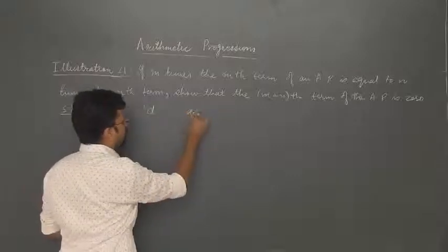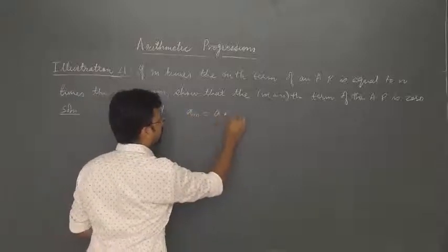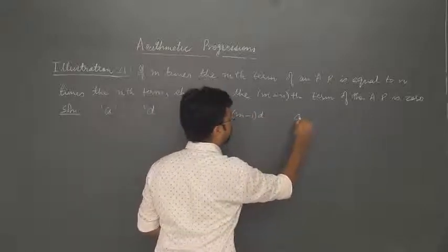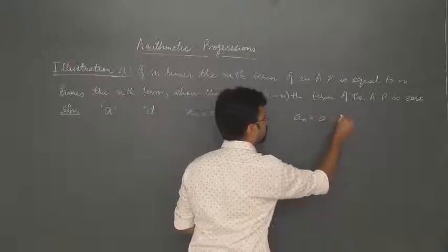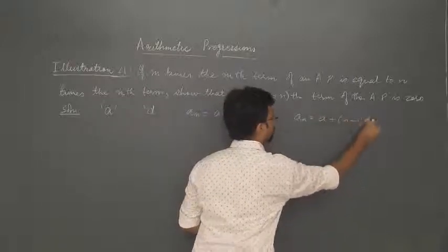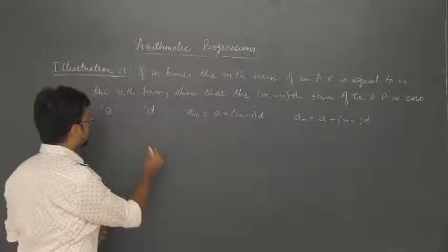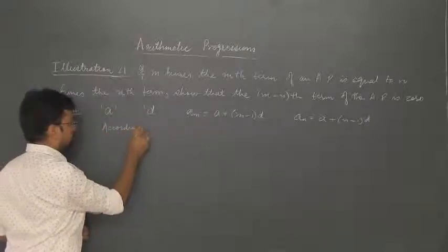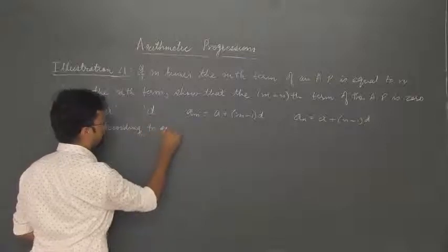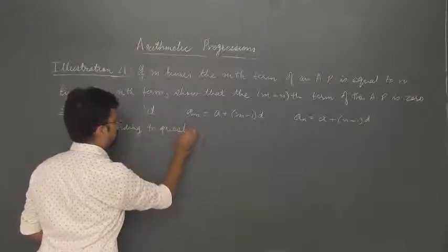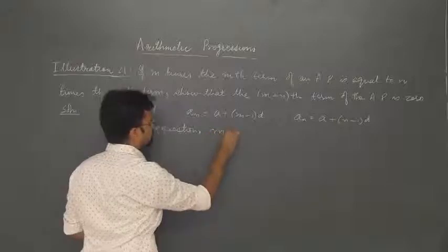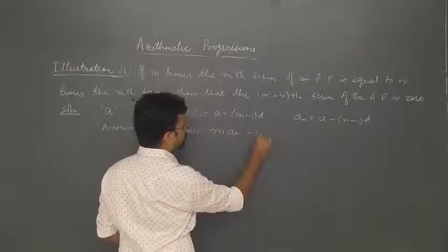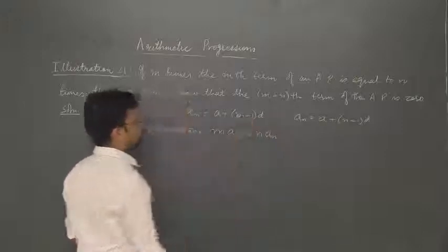The mth term, a_m, will be equal to a plus (m minus 1) into d, and the nth term will be equal to a plus (n minus 1) into d. According to the question, m times the mth term is equal to n times the nth term.